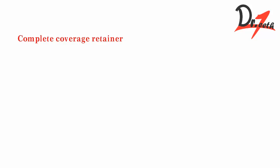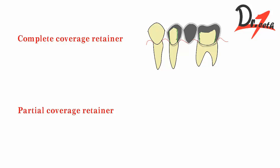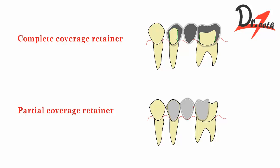Now we will see the difference between the complete coverage retainer and the partial coverage retainer. As the name says, the complete coverage retainer surrounds the entire abutment tooth. The partial coverage retainer partially covers the abutment teeth. These are termed as three-quarter crown, reverse three-quarter crown, four-fifth crown, seven-eighth crown, and so on.